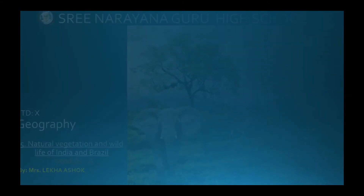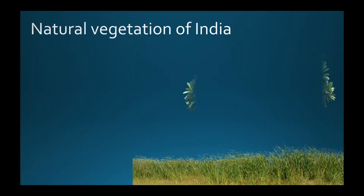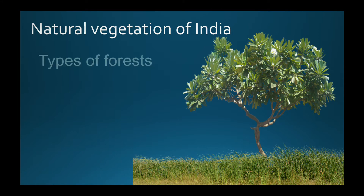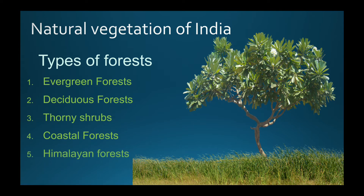India is a vast country with a variety of climate and soil. The variation in temperature and rainfall, together with the diversity of relief, has blessed India with different types of vegetation. Natural vegetation of India can be classified into five types of forests: evergreen forests, deciduous forests, thorny shrubs, coastal forests and Himalayan forests.